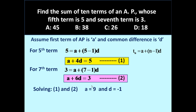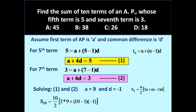We now have a series whose first term is 9 and common difference is minus 1. To find the sum of 10 terms, we use Sn equals n by 2 into (2A plus (n minus 1) into D), with n equal to 10, A equal to 9, and D equal to minus 1. Substituting all these values and simplifying, we get S10 equals 45.